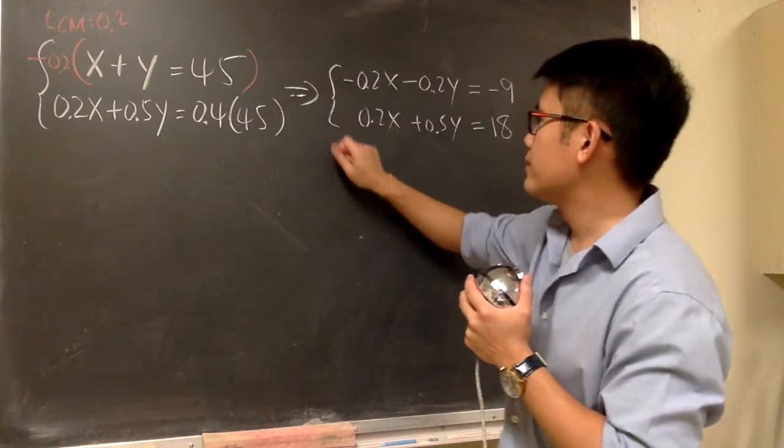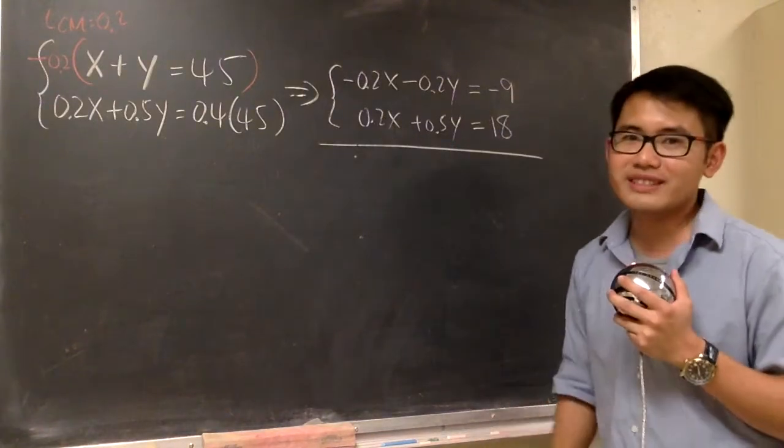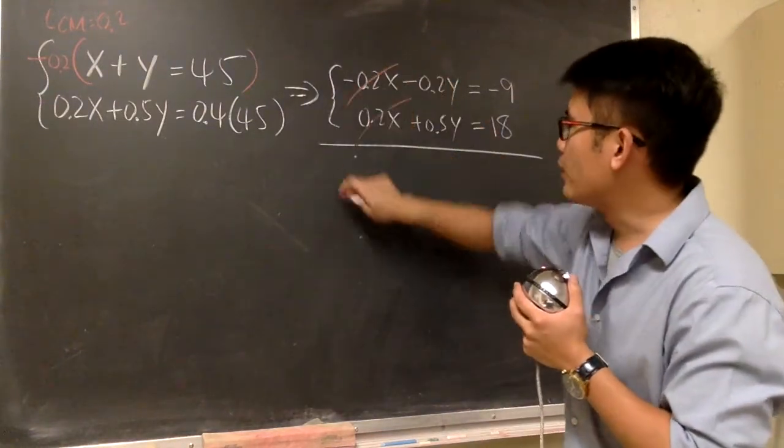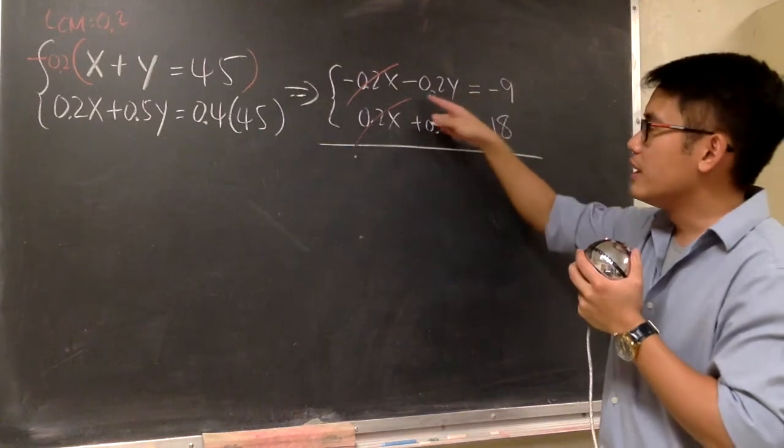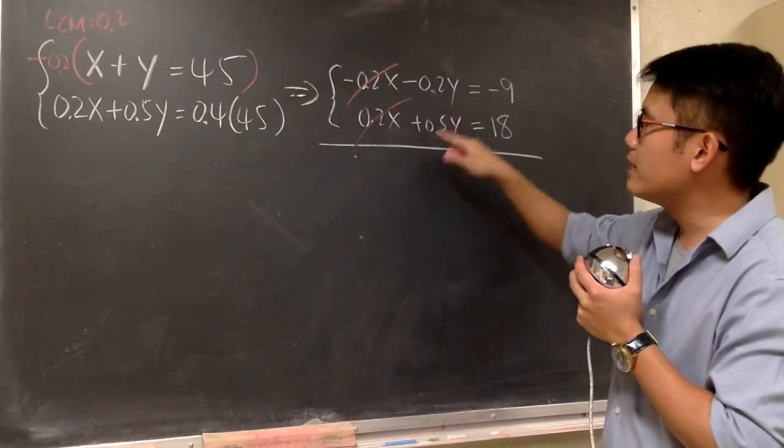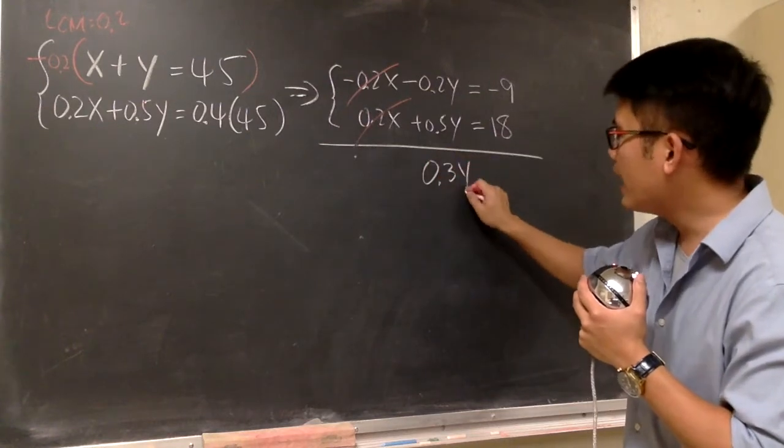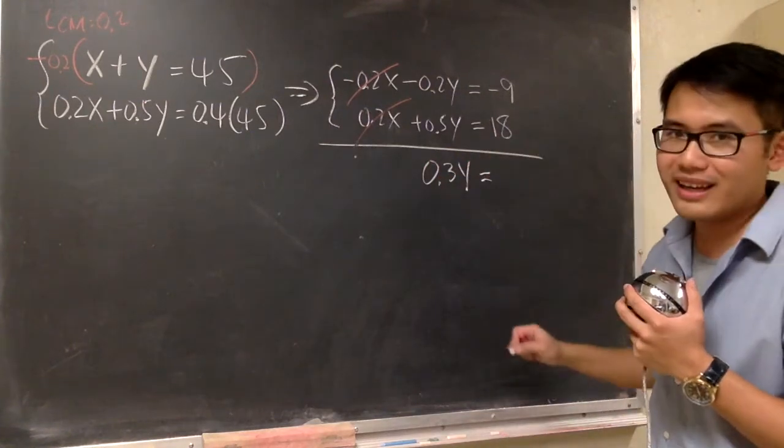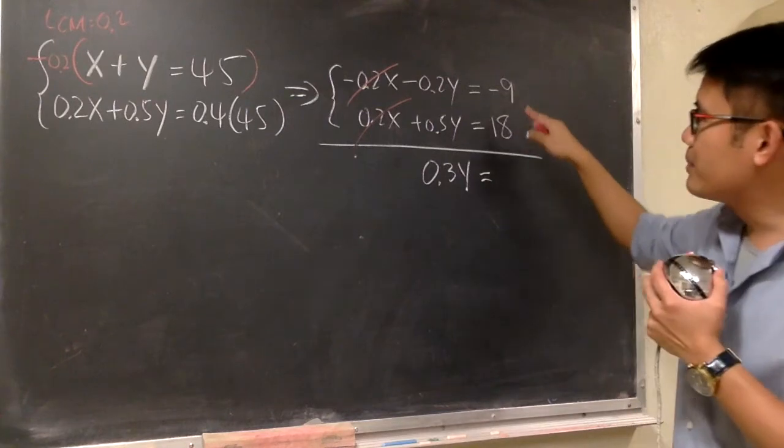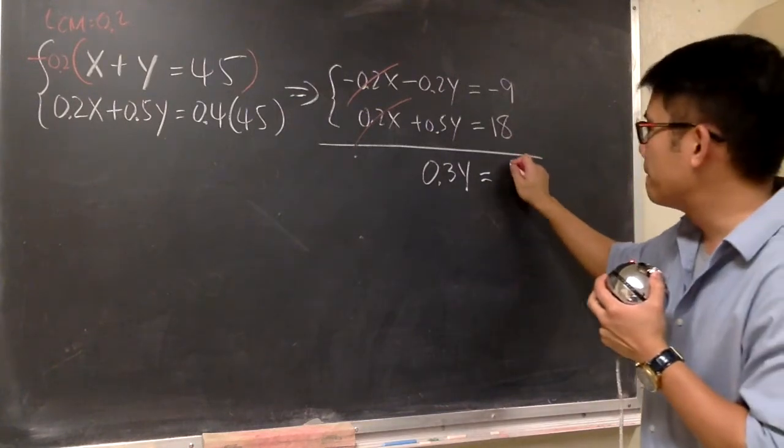And now, we are ready to solve it. This and that will cancel. And then, when we have negative 0.2y plus 0.5y, we get 0.3y. And this is equal to negative 9 plus 18, that's positive 9.